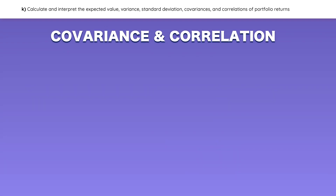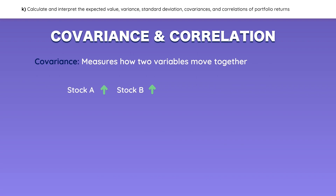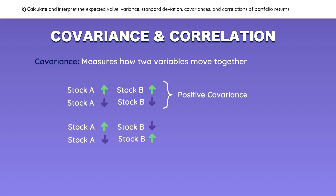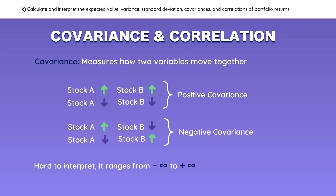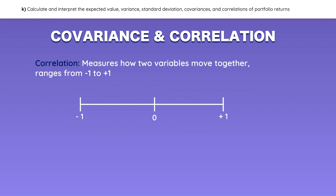Now let's introduce the topic of covariance, which is used to measure how two variables move together. If stock A increases when stock B increases, or falls when stock B falls, they have a positive covariance. If they move in opposite directions, they have a negative covariance. The problem with covariance is that it is hard to interpret because it can range from negative infinity to positive infinity. That's why many analysts use correlation instead, because it is scaled so that it always stays between negative 1 and positive 1.